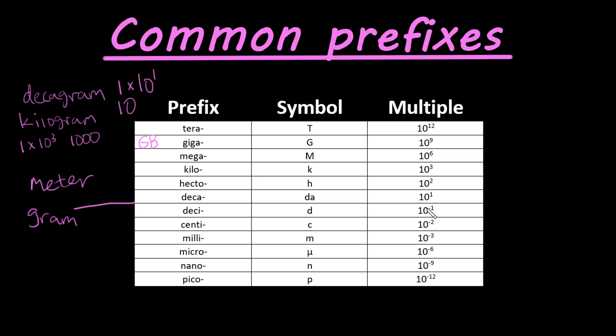And here we have the opposite end. So we go into our negatives. So we would move our decimal back one place. So deci, symbol d, 10 to the negative first power.